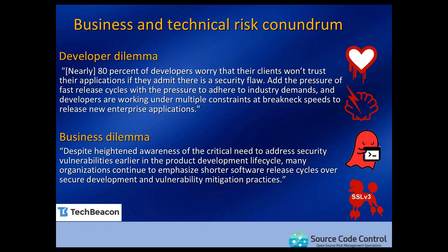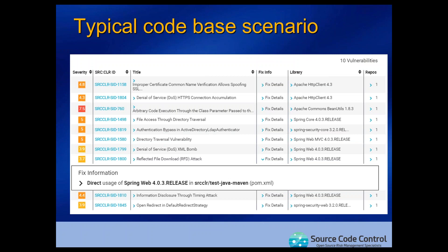A typical source code scenario: I recently went onto GitHub and found repositories of well-known organizations, then did a quick security scan of all the components. This is typically what we find when we first do a review with a potential client — within their source code, which could be delivered to end customers, there will be multiple vulnerabilities in components of varying levels of severity. In this example, the most severe vulnerabilities were rated at 7.5. This is not an uncommon scenario.